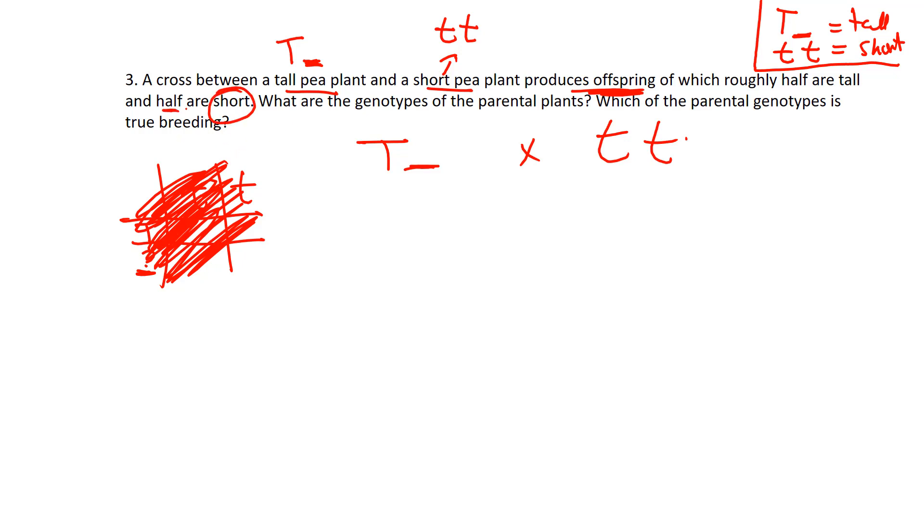Don't get hung up on the ratio yet. When there are short pea plant offspring, that means some of these offspring were little t little t. Now we know when you have short offspring that each parent must have contributed one of those recessive alleles for you to have short offspring.